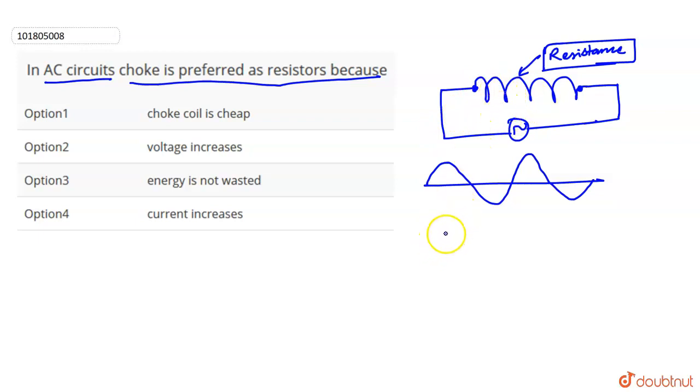We know that induced EMF is minus d by dt of phi B by Lenz's law. This is phi B, it is magnetic flux. Current change will change the flux. It is induced EMF. If it is connected to two ends, there will also be induced current.